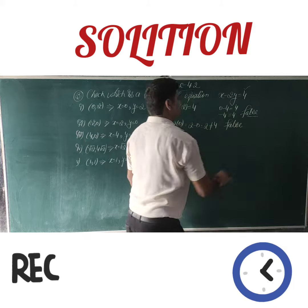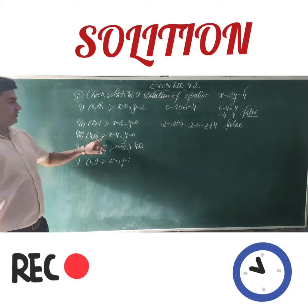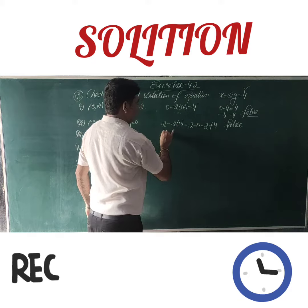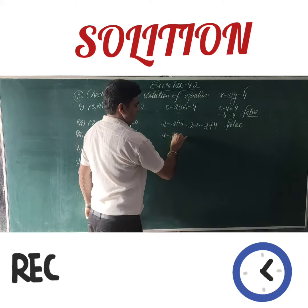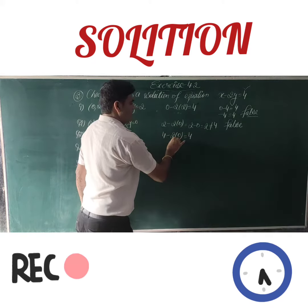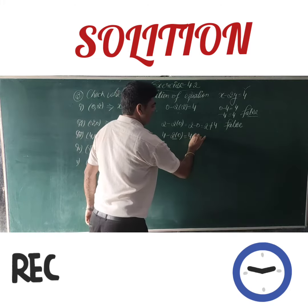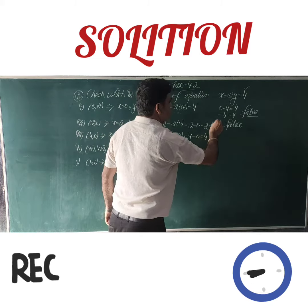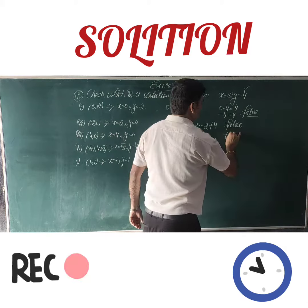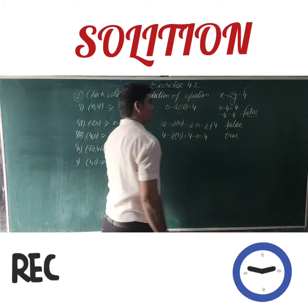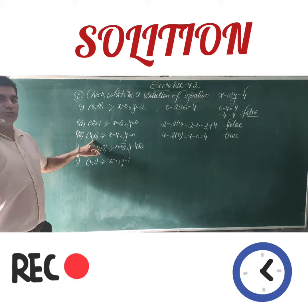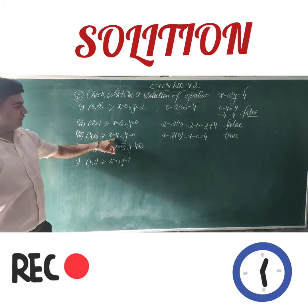Now we check the third point. x = 4, y = 0. Substituting: 4 minus 2 times 0 equals 4 minus 0 equals 4, which is the same as the right-hand side. So this is true — (4, 0) is a solution of the equation x minus 2y equals 4.